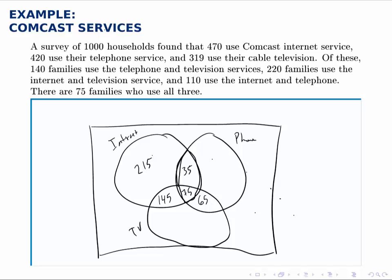Similarly, with the phone service, there are 420 total. We've accounted for those who use phone and internet or phone and TV, which is 65 plus 75 plus 35, totaling 175. Taking 175 away from 420, we get 245 families who use only the phone service.